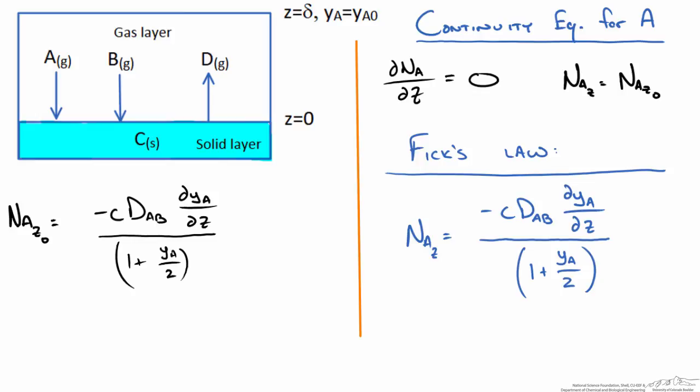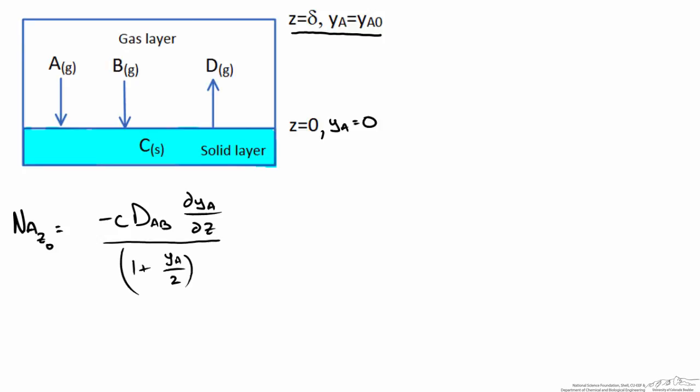If we are going to solve for yA as a function of z we need to rearrange terms and integrate using boundary conditions we know. The boundary conditions are that at z equals 0 we have an instantaneous reaction so yA is going to be equal to 0, and at z equals delta we know yA is equal to yA naught. If our end goal is to get an equation for yA as a function of z we first need to solve for NAz naught. We can solve for NAz naught using the boundary conditions.